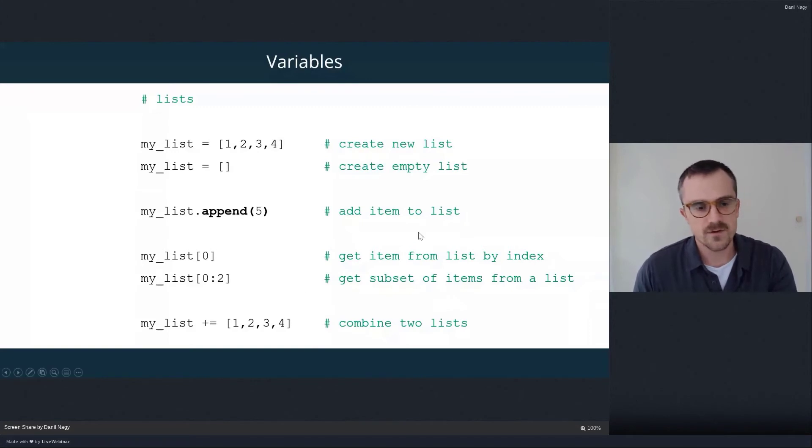And we can extract data from a list by supplying the index or the position of that item that we want in the list. So if we want the first item, we actually pass an index of zero because like in every programming language and even Grasshopper, counting in Python always starts with zero. So the first item is extracted by passing the zero index into these brackets.